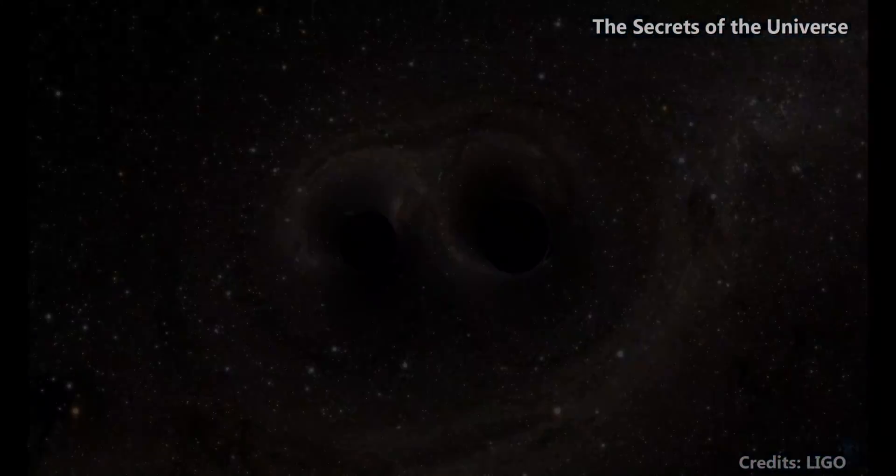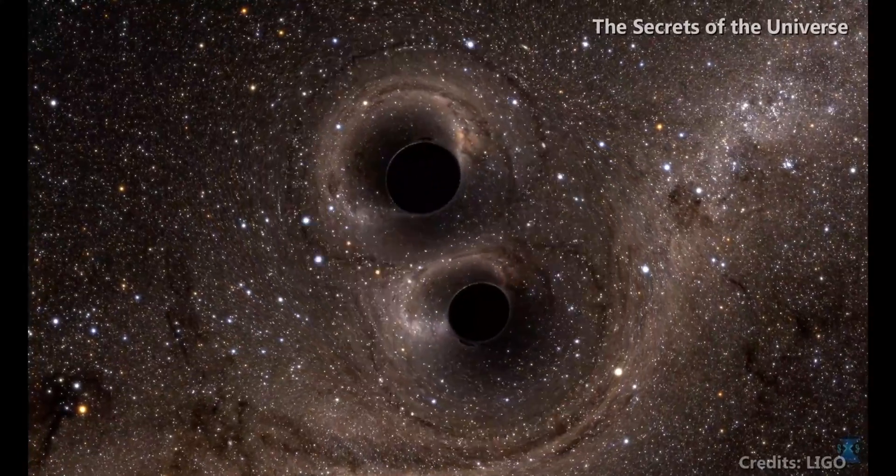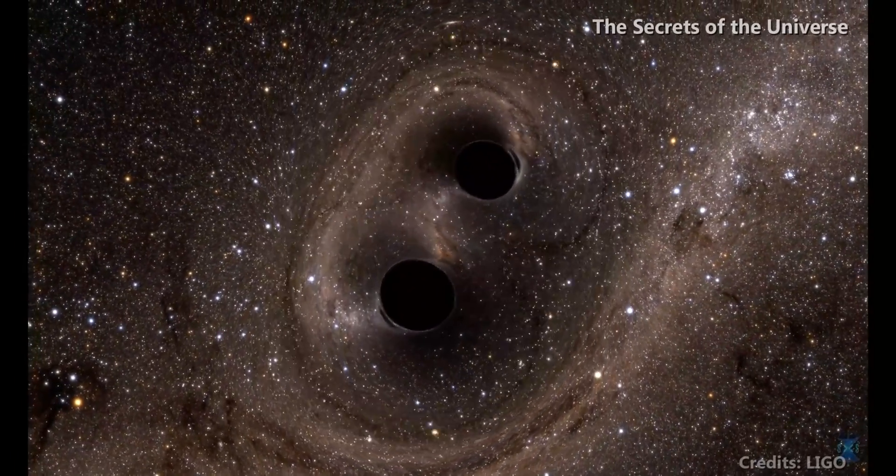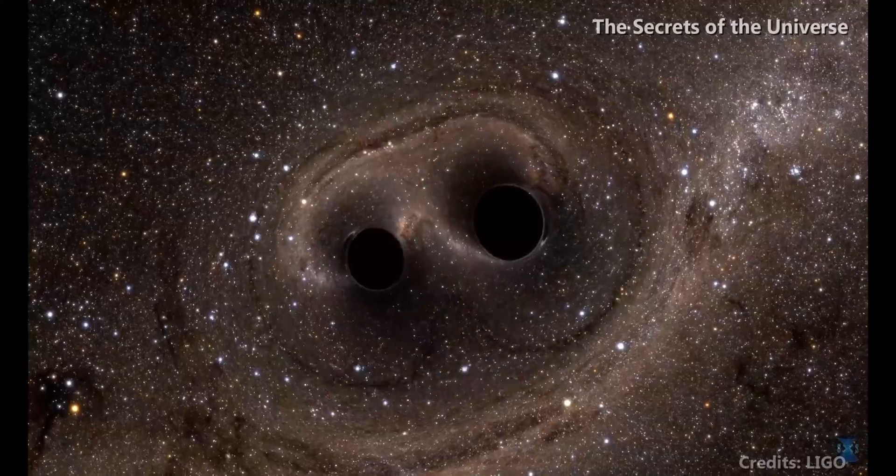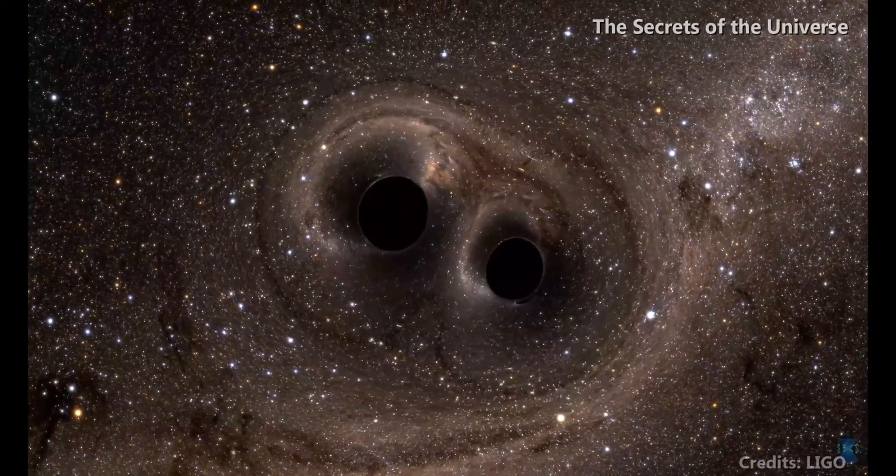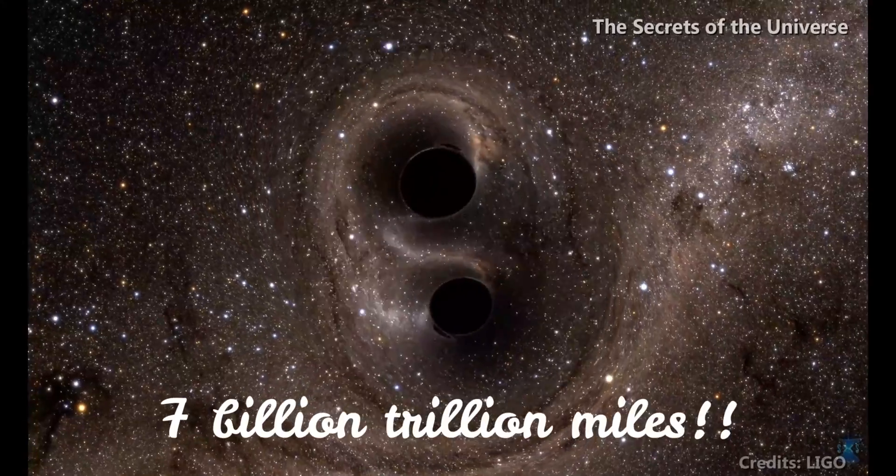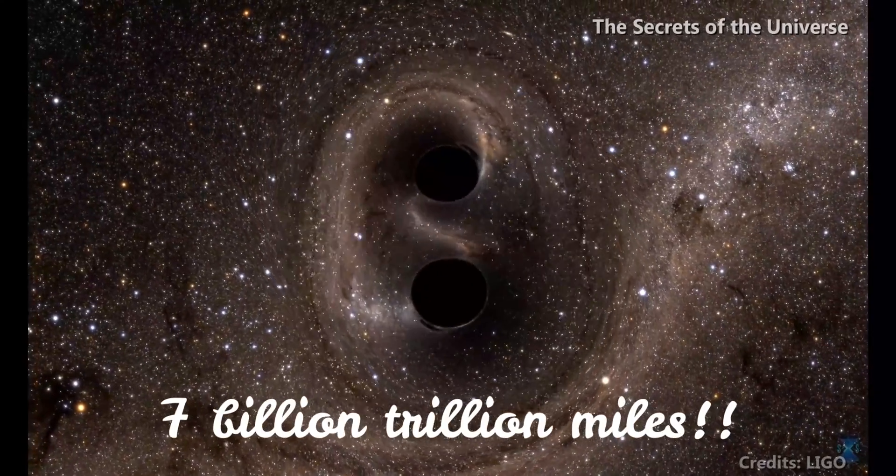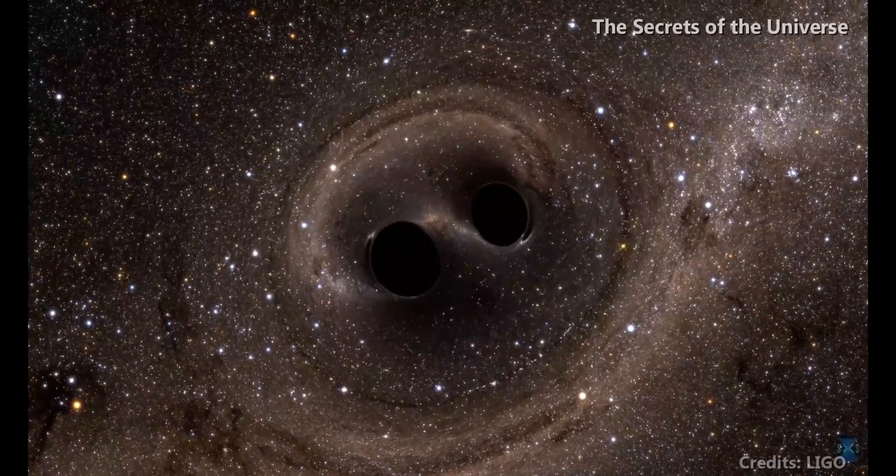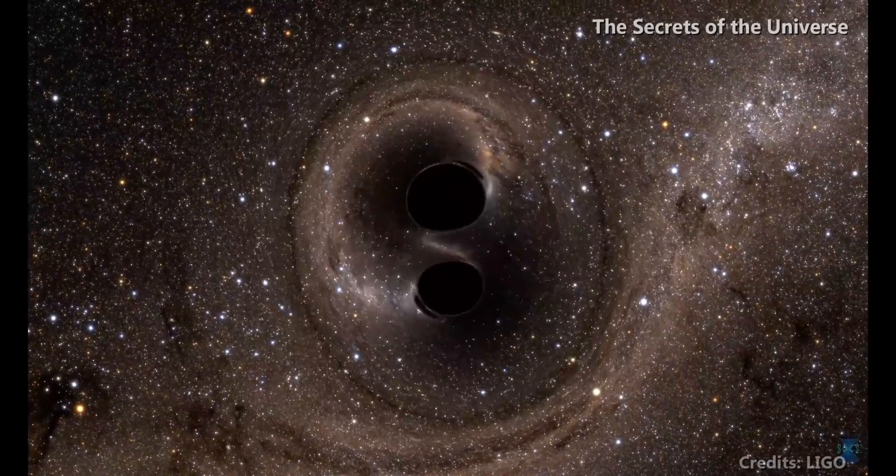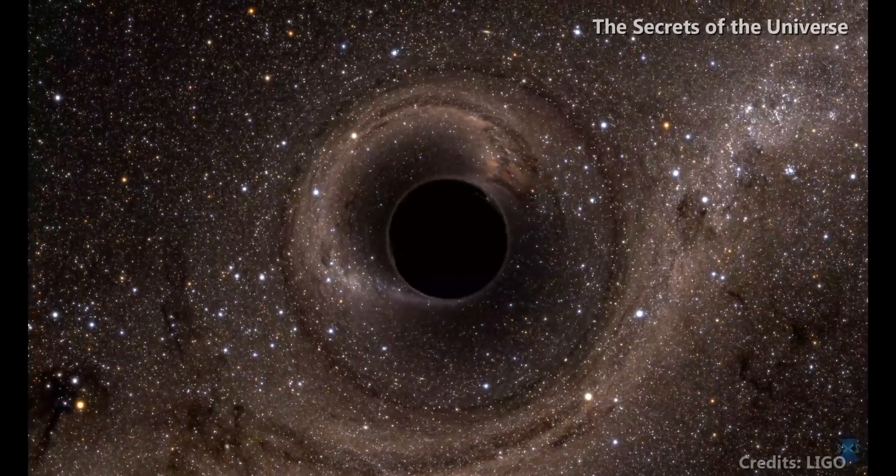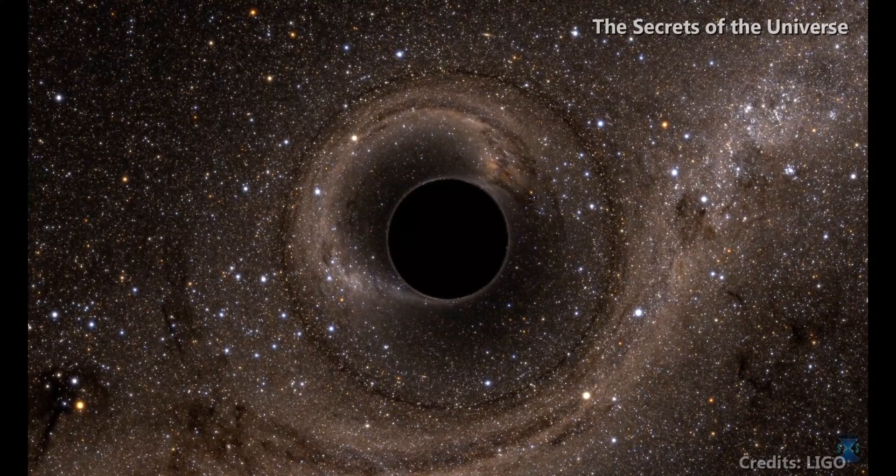Now the math says that by the time these waves reach us, they become very weak. In 2015 the LIGO detector detected the first gravitational waves from a black hole merger that was 1.3 billion light years away. This also means that the merger actually took place 1.3 billion years ago and the waves traveling at the speed of light reached us in 2015.